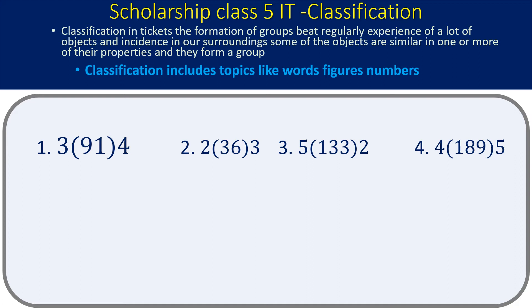Again, numbers are given in a pattern format: 3 (91) 4, meaning a number outside on the left, a number in brackets, and a number on the right. The sets are: 3 (91) 4, 2 (36) 3, 5 (133) 2, and 4 (189) 5. What is the connection between the number inside the bracket and those outside?